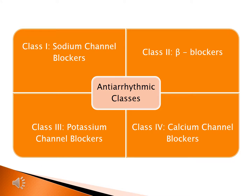There are primarily four different classes of antiarrhythmic medications. Class 1 are sodium channel blockers, class 2 are beta blockers, class 3 are potassium channel blockers, and class 4 are calcium channel blockers. When we think of rate control, we usually go with a class 2 beta blocker or a class 4 calcium channel blocker. Occasionally we will use class 3 antiarrhythmic medications, such as amiodarone, to also help achieve rate control.